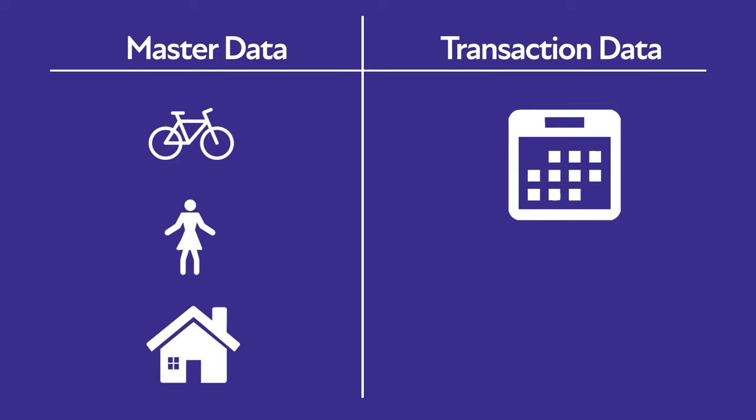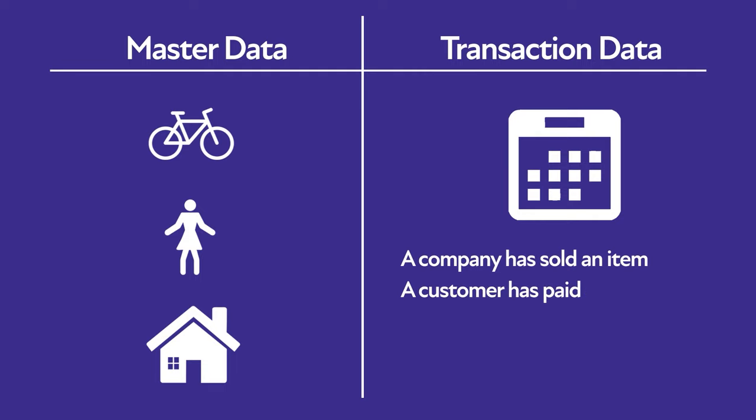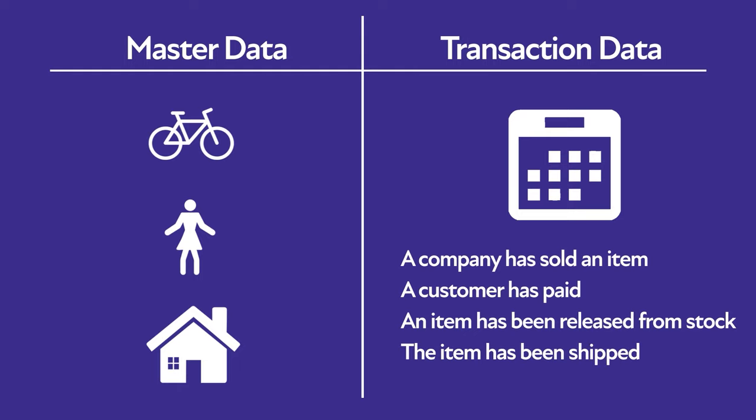Master data represents the things, people, and places the organization deals with. Transaction data, on the other hand, represents an event in which the master data participates. An event means something happened in the system — for example, a company has sold an item, a customer has paid, an item has been released from stock, or an item has been shipped. Each event in SAP is registered, usually in the form of a document.